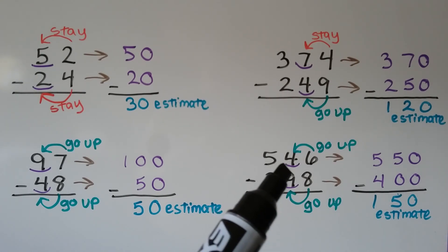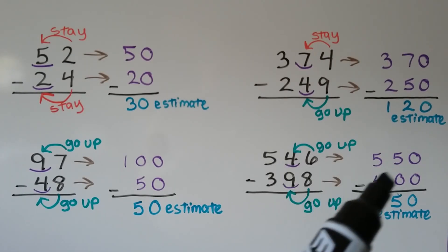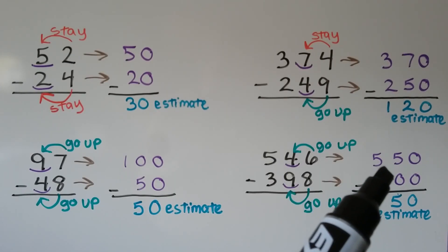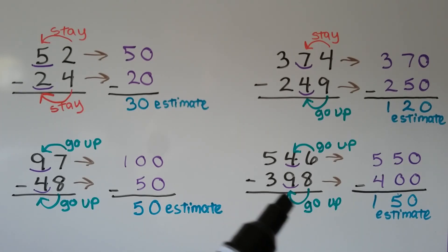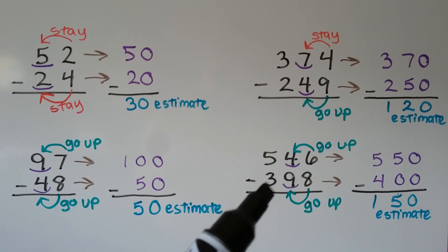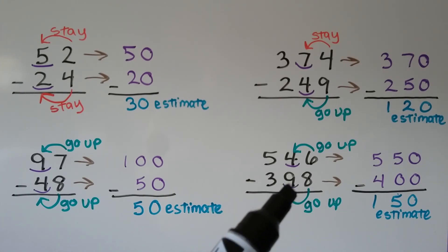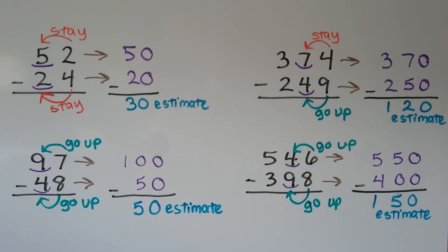For 546 rounding to the nearest 10, the 6 tells the 4 to go up to a 5 and turns into a 0, so that rounds to 550. For 398, the 8 tells the 9 to go up one more ten. If it does, we'll have to add another 100, because 10 tens is another 100. So it rounds to 400. And 550 minus 400 is about 150 for our estimate.